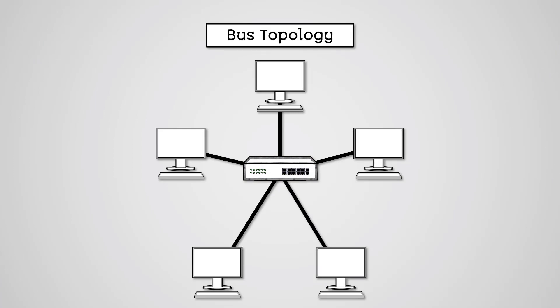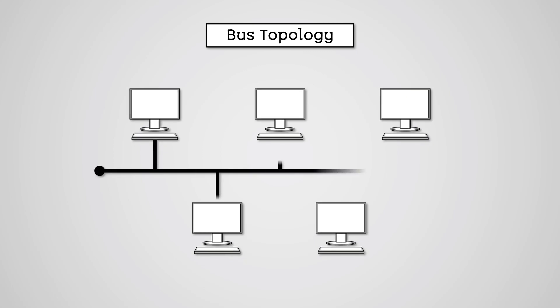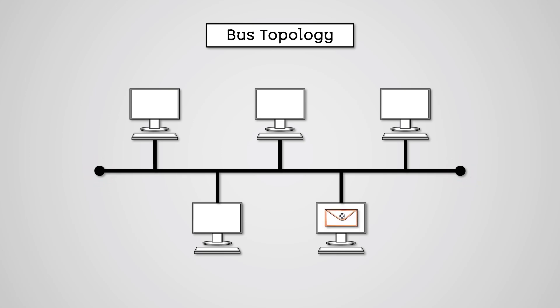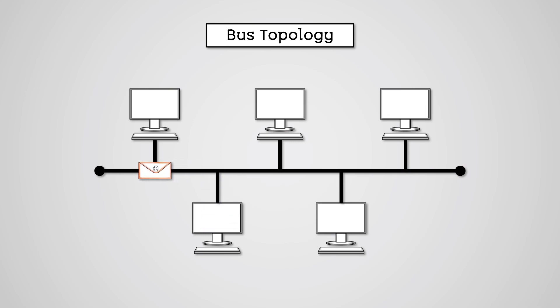A bus topology is when there is no central switch but every device is connected to every other device via a single central cable, commonly known as the backbone. At each end of this cable are terminators which prevent the electrical signal from bouncing back down the backbone cable. When a device sends data to another device, the data will be sent out in both directions along the backbone and will be received by every single device connected to it.